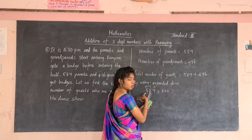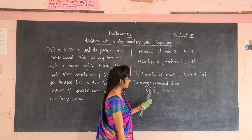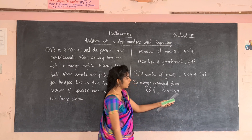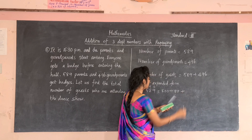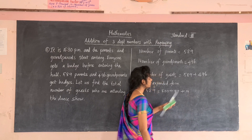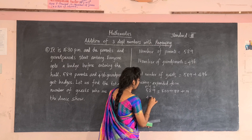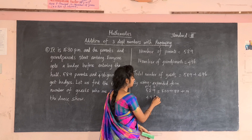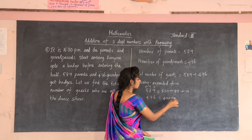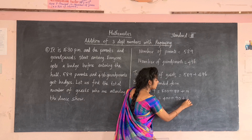Now expand 496: four in the hundreds place gives 400; nine in the tens place gives 90; six in the ones place gives 6. So 496 expanded is 400 + 90 + 6. Now we add the ones, then tens, then hundreds to get the same answer as before.